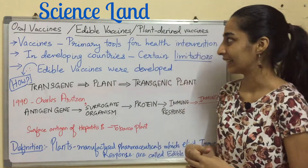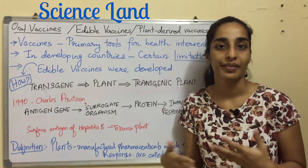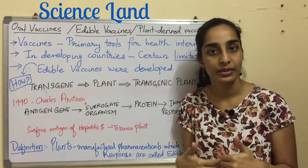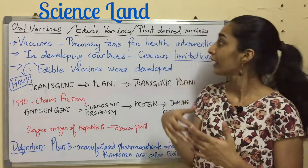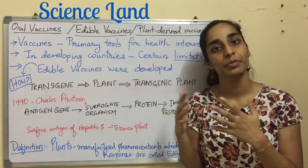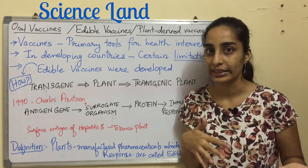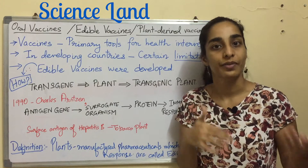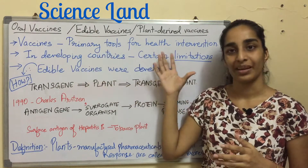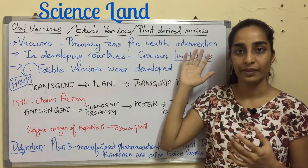Let's start. Edible vaccines are also known as oral vaccines because they are administered orally. They are also known as plant-derived vaccines because plants manufacture these kinds of vaccines. Vaccines are the primary tools for health intervention.